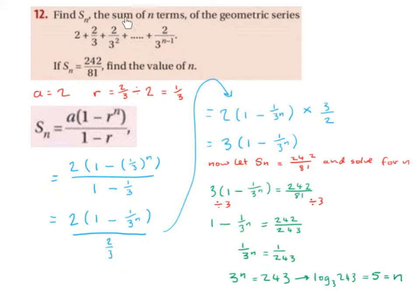Find Sn, the sum of n terms of the geometric series: 2 plus 2 thirds, plus 2 over 3 squared, plus dot dot dot, 2 over 3 to the power of n minus 1. If Sn is equal to 242 over 81, find the value of n.